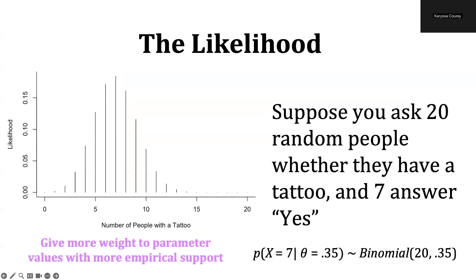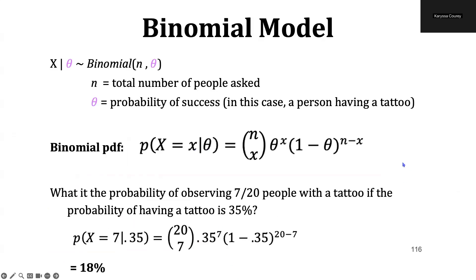Suppose we ask 20 random people whether or not they have a tattoo, and 7 answer yes. We can go ahead and plot our likelihood here. So based on this information, we can see that 7 is very likely, as well as values close to 7, but as we get to lower and higher values, these are increasingly less likely.